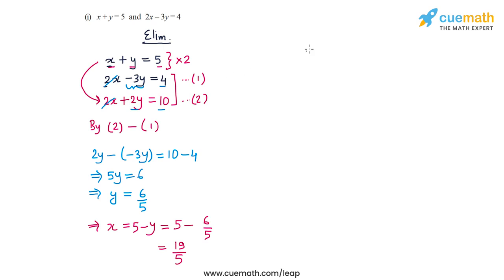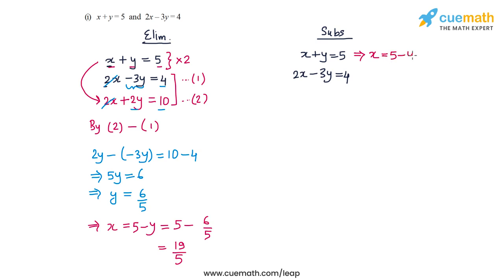Now let's solve the same pair of equations using substitution. Again the pair is x plus y equal to 5 and 2x minus 3y equal to 4. From the first equation, x can be written as 5 minus y. Let me substitute this value of x into the second equation: 2 times (5 minus y) minus 3y equal to 4.